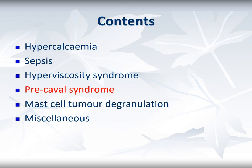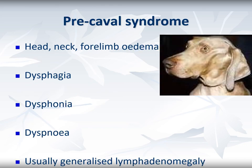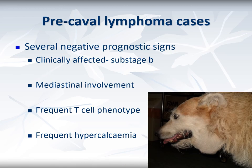Moving on to pre-caval syndrome. This is a much more frequently recognised presentation in which retropharyngeal, cranial mediastinal, or other lymph nodes encircle local structures including the airway, oesophagus, and large vessels. Over time these patients develop head, neck, and forelimb oedema without hind limb oedema, dysphagia, dysphonia, and ultimately dyspnoea. Although many cases have generalised lymphadenomegaly consistent with lymphoma from the outset, sometimes disease is largely mediastinal and more occult. Those lymphoma cases affected by pre-caval syndrome have several negative prognostic indicators, including being sub-stage b, having mediastinal involvement which frequently leads to T-cell phenotype, and a diagnosis of hypercalcaemia.